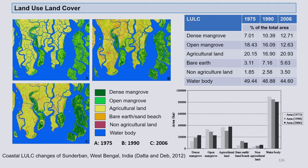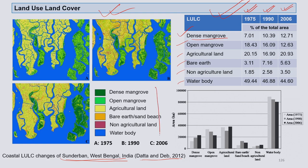Another example on LULC is from the Sundarban area of West Bengal — very famous for mangroves and a very vulnerable ecosystem. A study was carried out by researchers covering 1975, after 15 years in 1990, and again in 2006. So every 10 to 15 years, how that particular Sundarban area is changing is tracked using remote sensing and GIS. The categories are: dense mangrove, open mangrove, agriculture land, bare earth, non-agriculture land, and water body.